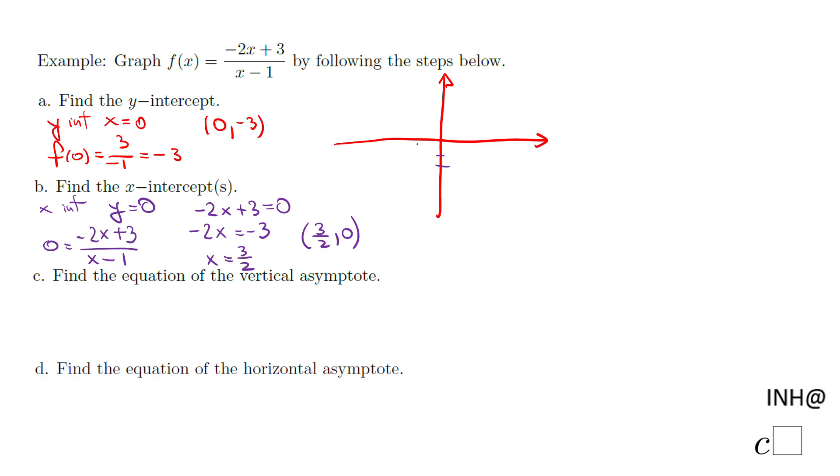This one disappears and then we have three half and zero. So one and a half, let's say it's right here. So we already have two points of this rational function.